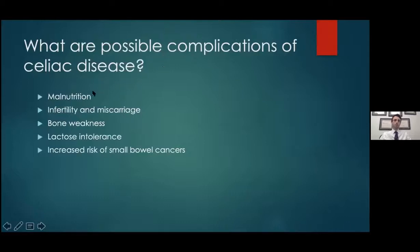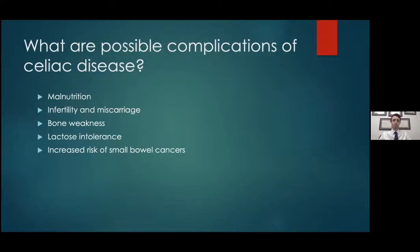Complications of celiac disease include many different issues, since it's an autoimmune process affecting more than just the GI tract. Severe celiac disease can cause nutrient and vitamin deficiencies impacting other body systems. Malnutrition is a concern, so we monitor vitamin levels and supplement as necessary. Other complications include infertility, miscarriage, bone weakness, lactose intolerance, and an increased risk of small bowel cancers. These are reasons why good follow-up with a gastroenterologist is important.